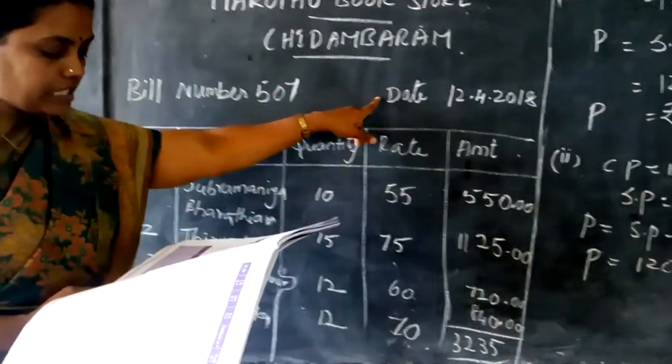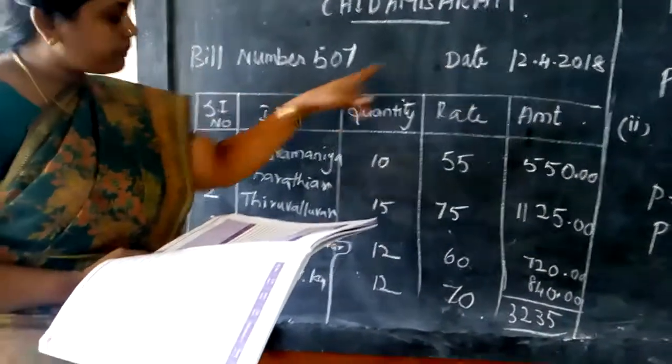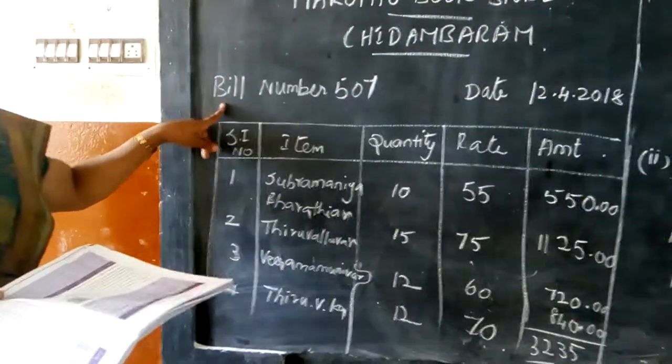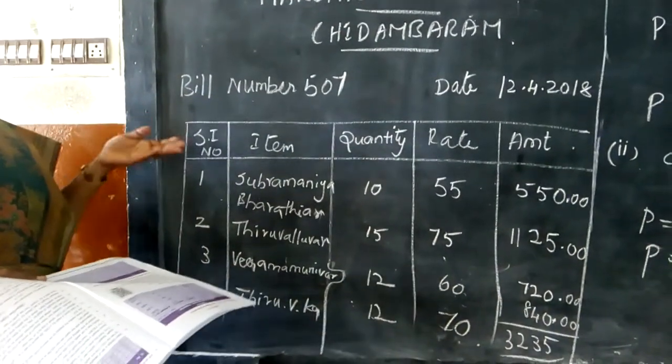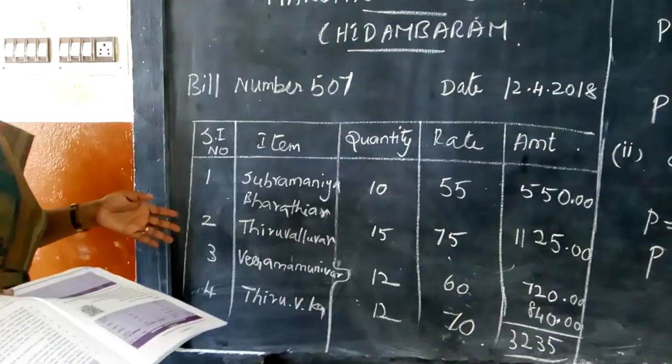On 12th 4th 2018. The bill number is 507. They have given the things which have been purchased, but we are going to form a bill over here.